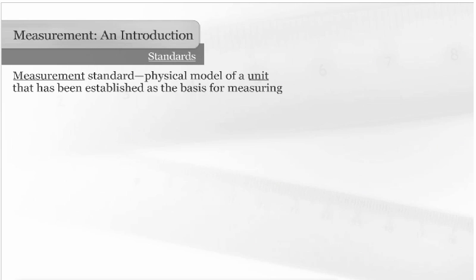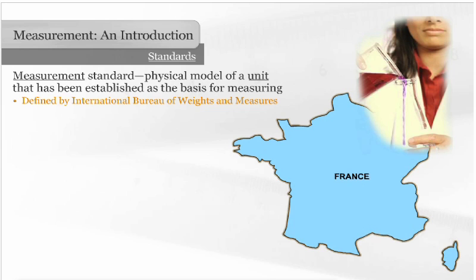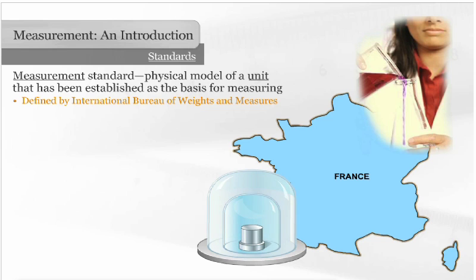A measurement standard is a physical model of a unit that has been established as the basis for measuring. Primary standards for all units are defined by the International Bureau of Weights and Measures in France. One example is the primary standard for kilogram, a platinum cylinder kept under a glass dome by the Bureau.